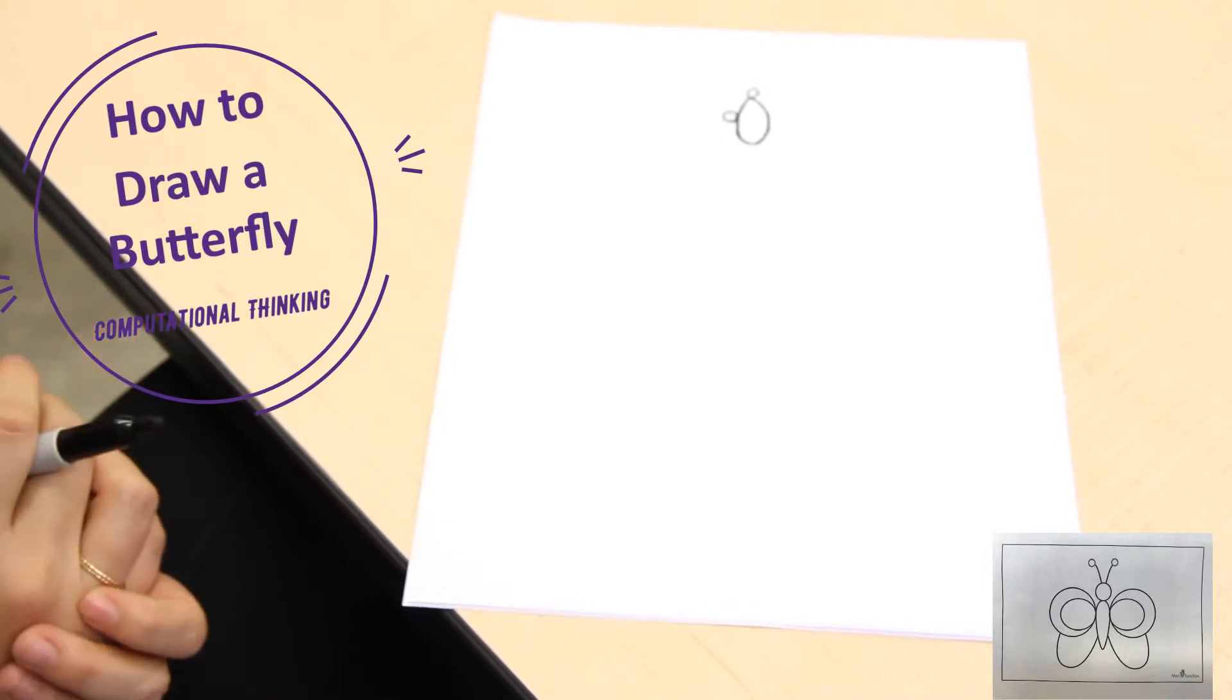A U shape from the middle of the circle to the oval shape. And now do the same on the other side.